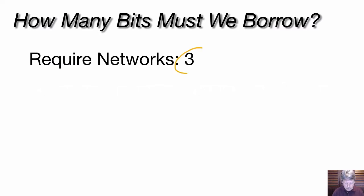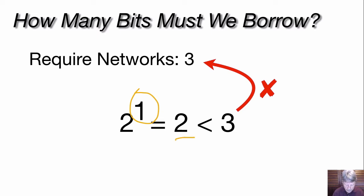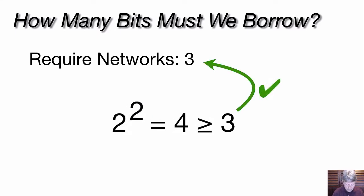We need three subnets. We need to figure out what binary power can give us at least three. If we start with one bit, two raised to the power of one gives us two — that's not going to work, since one bit can only have two possible values, zero and one, limiting us to two subnets. That's not enough. On the other hand, if we use two bits, two raised to the power of two gives us four, which is greater than or equal to the three that we need. Therefore, that's going to work for us.